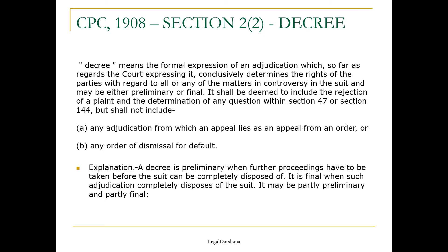Another issue was A was also claiming compensation out of the profits made by B. The judge said that yes, B has illegally possessed the property so B is going to return the property back to A — this decree was final. It became a conclusive decree when it came to the issue of returning the property. But in the subsequent issue, the court ordered an inquiry to decide the amount to be paid back to A in the next proceeding. So the first issue was decided finally, but the second issue was not disposed of — hence the second decree is preliminary. Such is the case of partly preliminary and partly final.